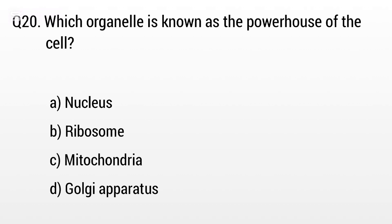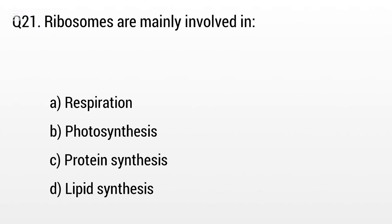Question 20. Which organelle is known as the powerhouse of the cell? Option A: Nucleus, B: Ribosome, C: Mitochondria, D: Golgi apparatus. The right answer is option C, Mitochondria.